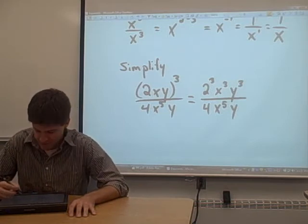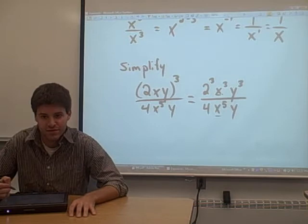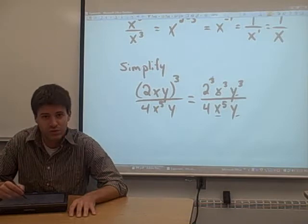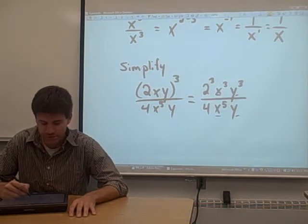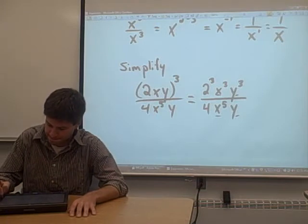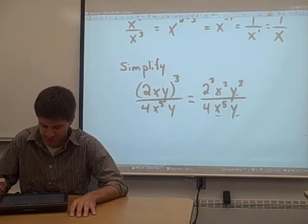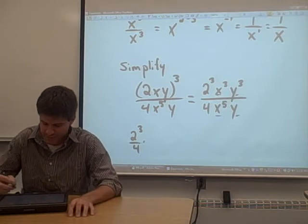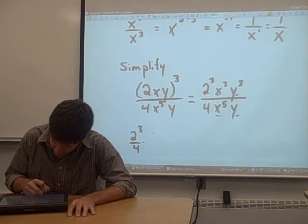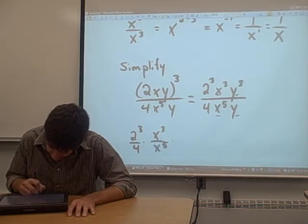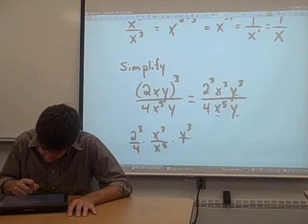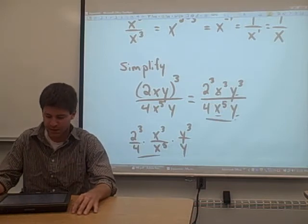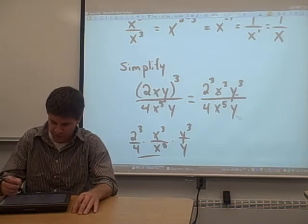Now, it looks like we have a couple of similar bases. These x's have the same base. Also, these y's have the same base. It also looks like we have a constant here. 2 cubed is just going to be 8, and we have a 4 in the denominator, so we can do a little bit of cancellation there as well. So let's split this thing up into a couple of pieces. Let's take the constants out: 2 cubed over 4. We're going to multiply that by x cubed over x to the 5th, and we're going to multiply that by y cubed over y. Notice we have the same thing as before, just rewritten and split up into three different pieces.